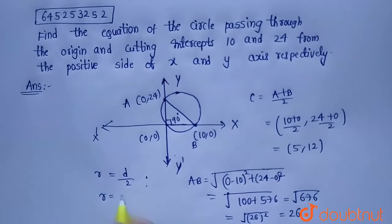So diameter is 26. Let's find out the radius. Radius is diameter by 2, so 26 by 2 equals 13.